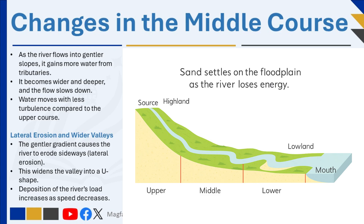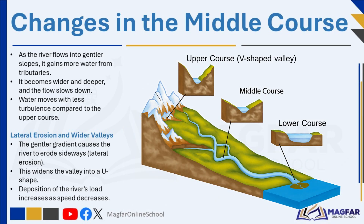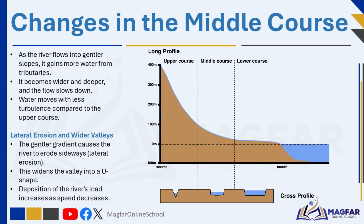Previously we saw that in the upper course of a river, the main type of erosion is vertical erosion, where the river cuts downwards into the landscape forming steep narrow valleys. In the middle course, the landscape changes significantly as the river flows from steep highlands into areas of gentler slopes. The river gains more water from its tributaries, becoming wider and deeper, but begins to slow down. Instead of cutting deeply through vertical erosion, the river now performs more lateral erosion — wearing away the sides of its banks sideways.